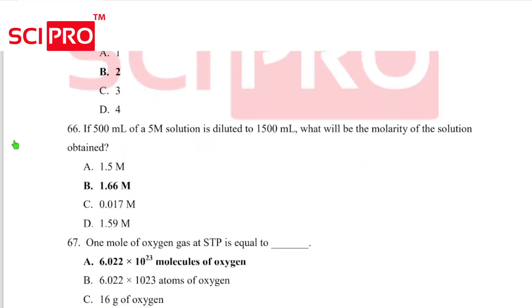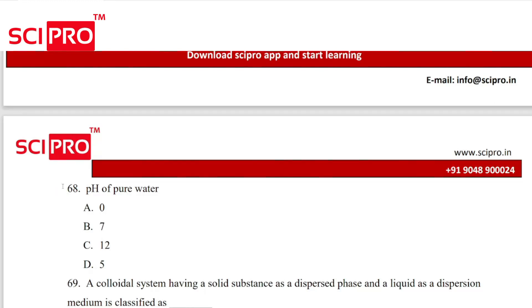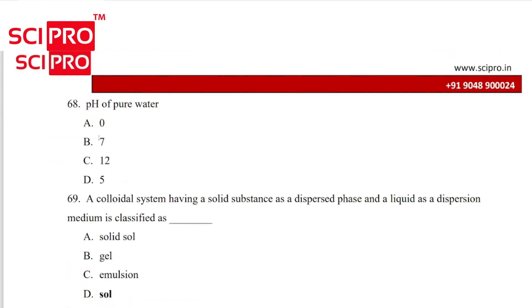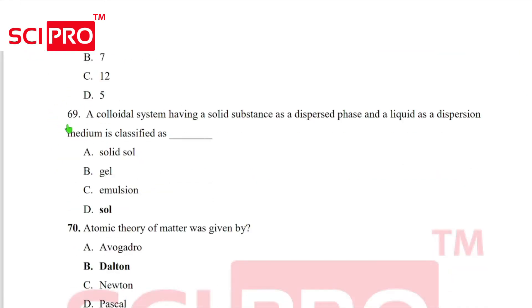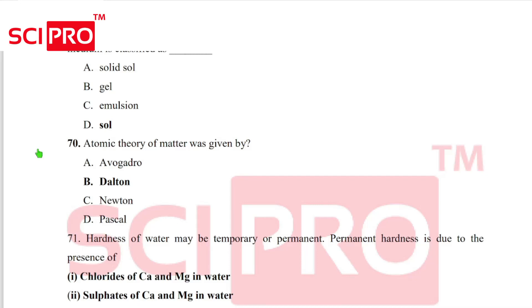Question number 66, if 500 ml of a 5 molar solution is diluted to 1500 ml, what will be the molarity of the solution? Answer is 1.66 molar. Question number 67, answer A. Question number 68, answer 7, pH of pure water is 7. Question number 69, a colloidal system having a solid substance as a dispersed phase and liquid as a dispersion medium is classified as sol. Question number 70, the atomic theory of matter was given by Dalton.